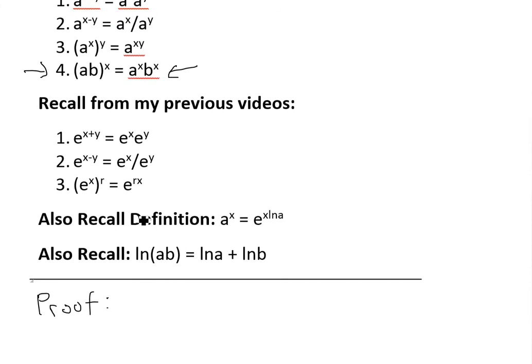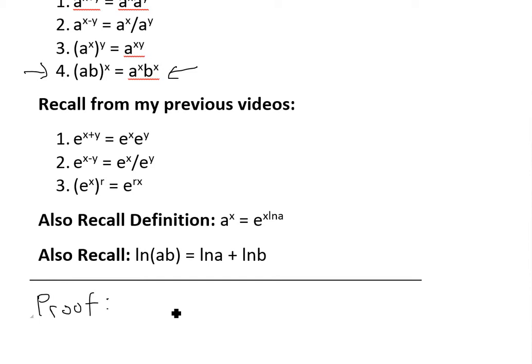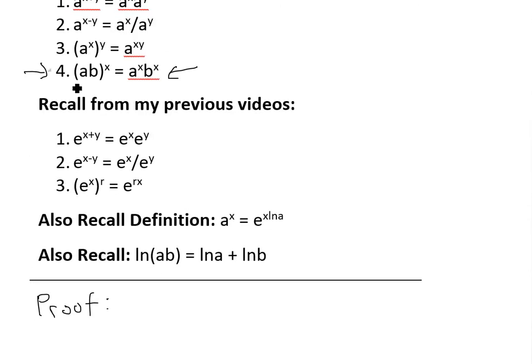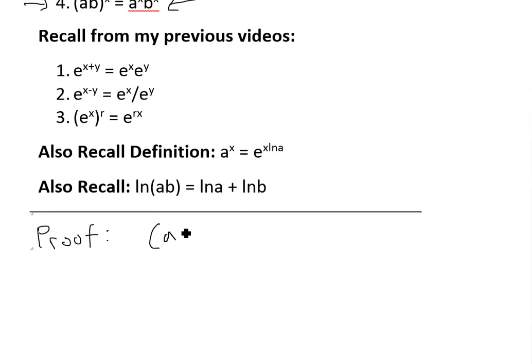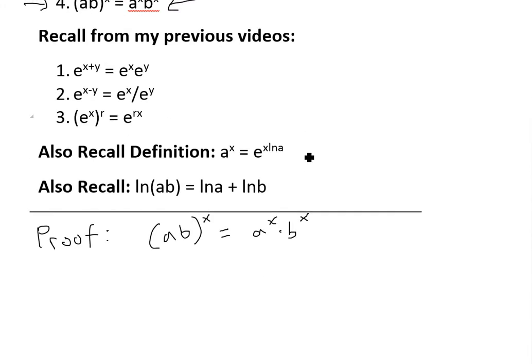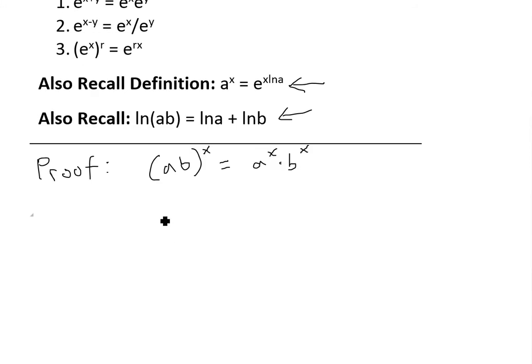So now if we look at the proof, I'll just write it out first. Law 4: ab all to the power of x equals a to the power of x times b to the power of x. So basically now to prove this, first what we should do is write this down using this definition, simplify that out, then I'll use this right here to prove it after.